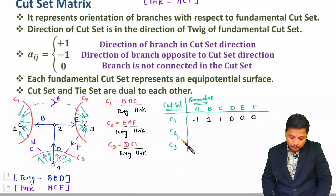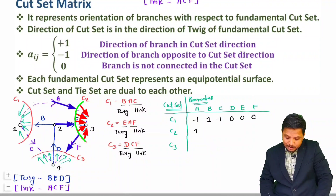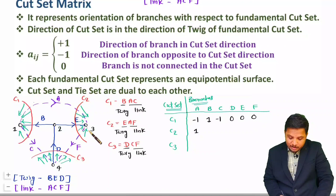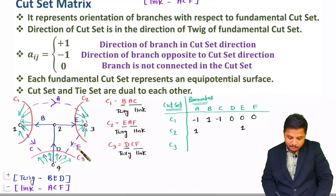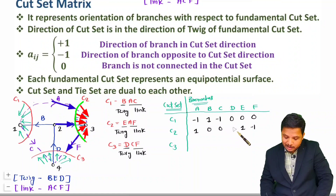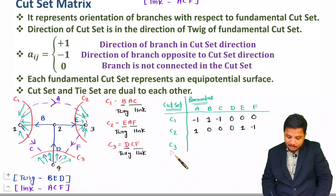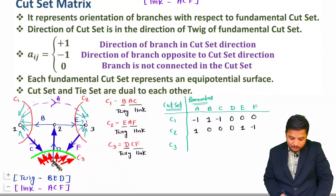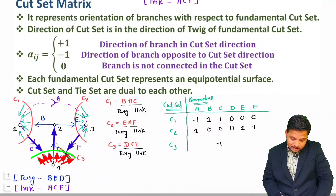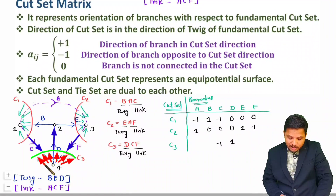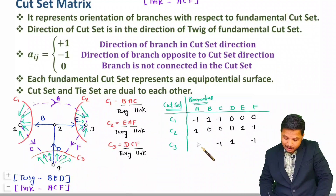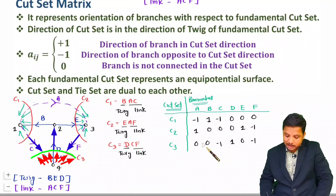For cut set C2: branch A is in the direction of C2, so write plus 1. Branch E is also in the direction of C2, so write plus 1. Branch F is in the opposite direction, so write minus 1. Branches B, C, and D are not connected with C2, so write 0. For cut set C3: branch C is in the opposite direction, so write minus 1. Branch D is in the direction of C3, so write plus 1. Branch F is in the opposite direction, so write minus 1. Branches A, B, and E are not connected with C3, so write 0.